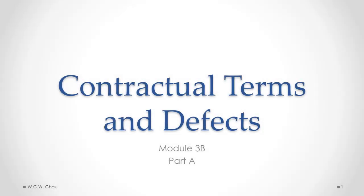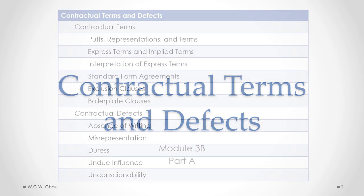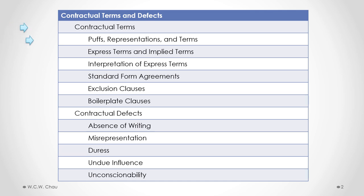Hello, this is Waylon Chow, and welcome to Contractual Terms and Defects, Module 3B, Part A. In this part of this module, we will look at the differences between a PUF, a representation, and a term of a contract, and then explain what is an express term of a contract versus an implied term of a contract, and look at how we go about interpreting express terms of a contract when there is a dispute as to the meaning of what is something that is written in a contract.